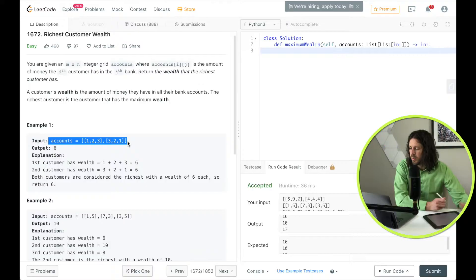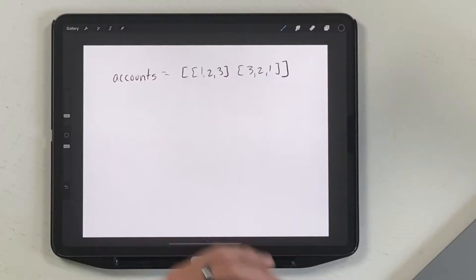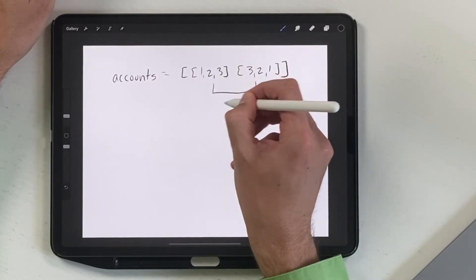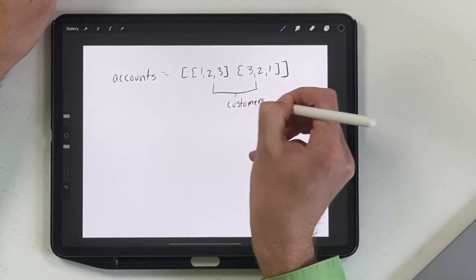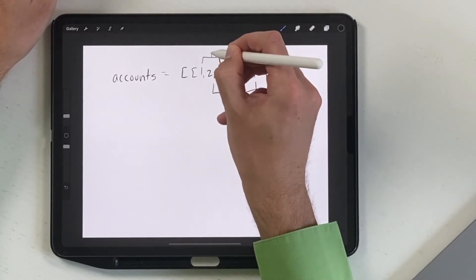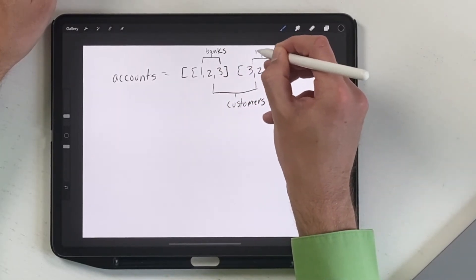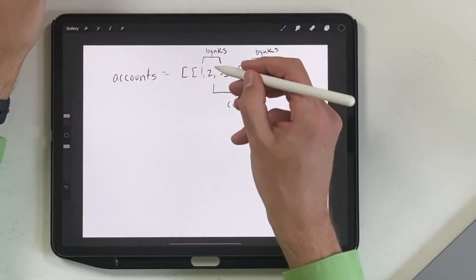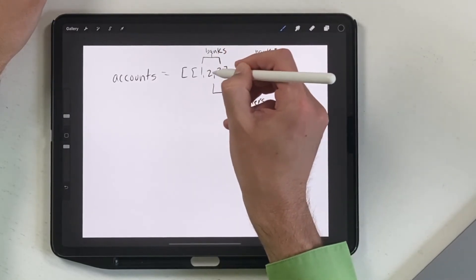We try to explain that through an example. So what they have here is they have accounts and they have one, two, three, and three, two, one. So accounts, first set is one, two, three. The next set is three, two, one.